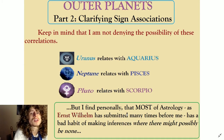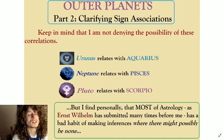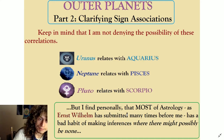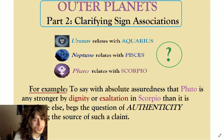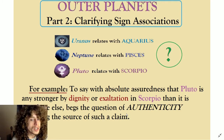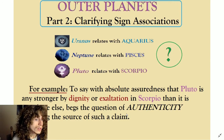Keep in mind that I'm not denying the possibility of these correlations. But I find personally that most of astrology, as Ernst Wilhelm has submitted many times before me, has a bad habit of making inferences where there might possibly be none. To say with absolute assuredness that Pluto is any stronger by dignity or exaltation by being in Scorpio than it is anywhere else begs the question of authenticity regarding the source of such a claim.